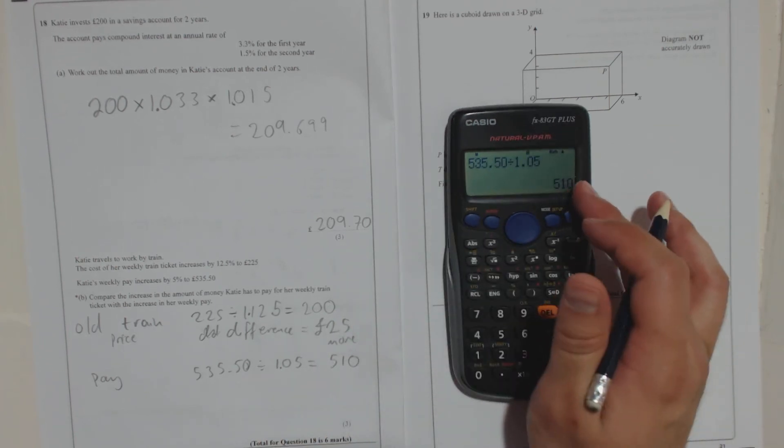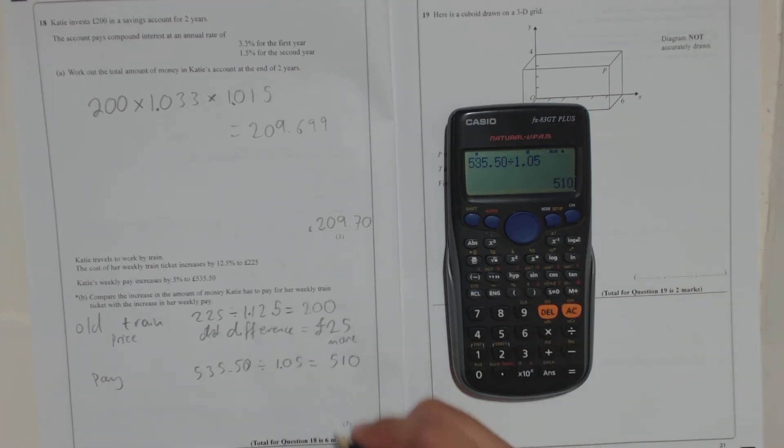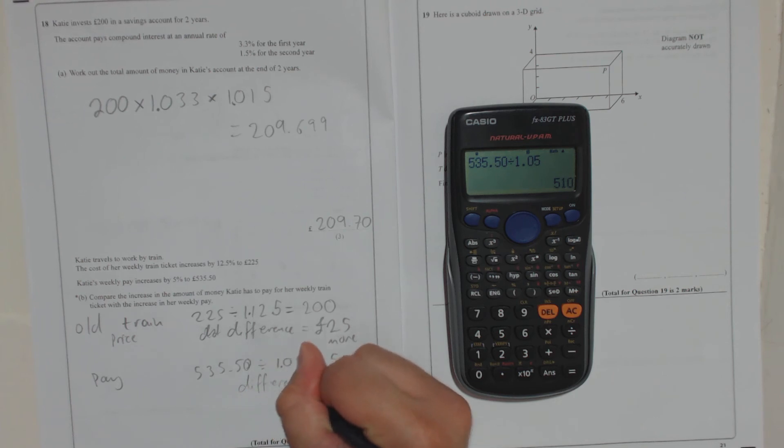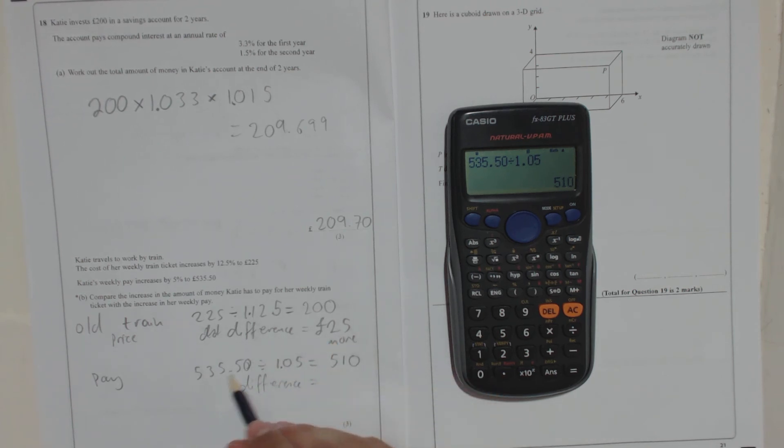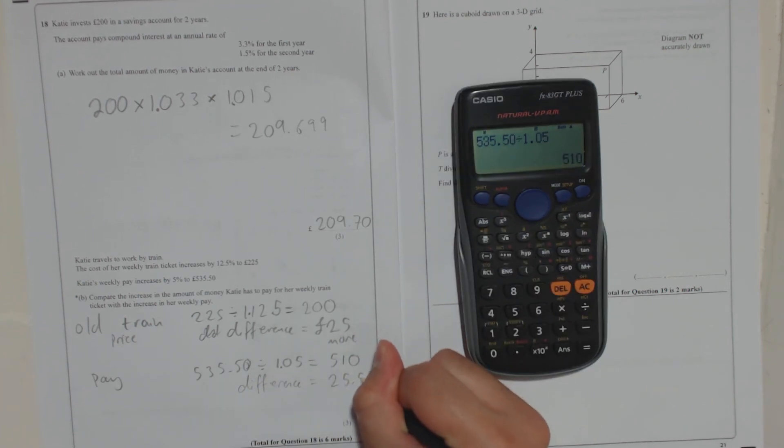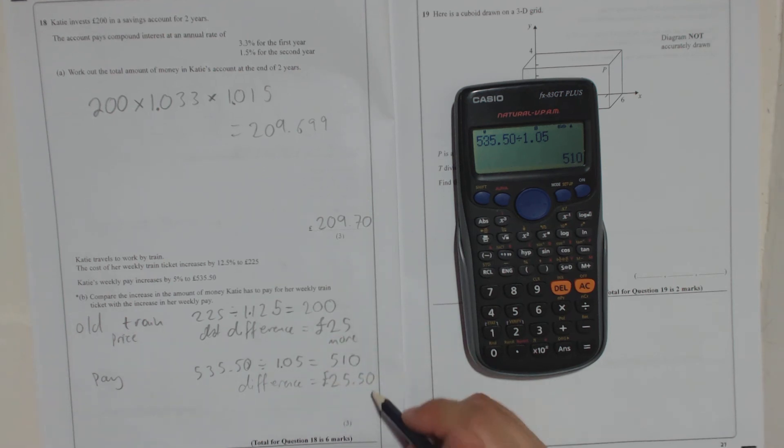So that's what it used to, that's what she used to get paid, 510. And now she gets 535.50. So the difference is 535.50 take away 510, which is 25 pounds and 50 pence.